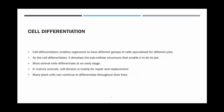Cell differentiation is the process by which cells become specialised cells from undifferentiated cells. They enable organisms to have different groups of cells that can do different jobs. As the cell differentiates, it develops the appropriate set of structures to enable it to do its job.